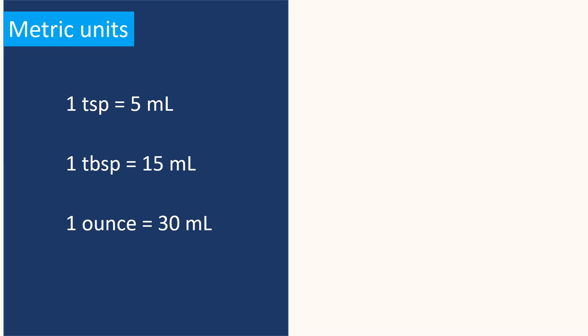The commonly used metric units for liquids are teaspoonful, tablespoonful, and ounces. One teaspoonful equals 5 milliliters, one tablespoonful is 15 milliliters, and one ounce is 30 milliliters.